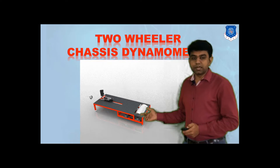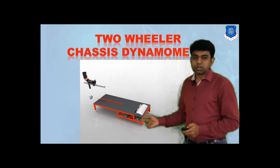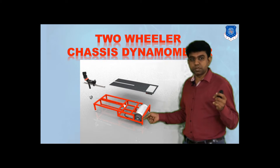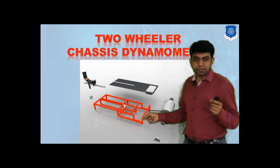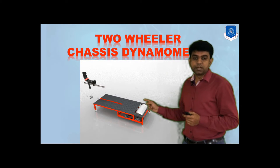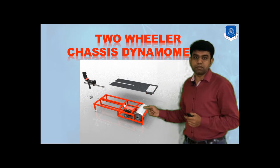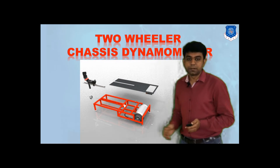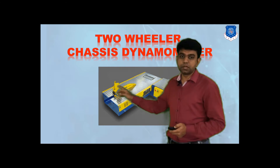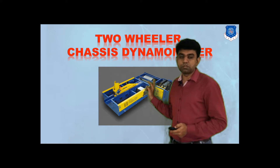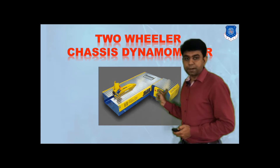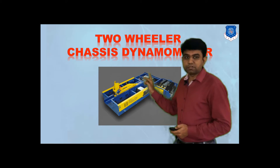Whenever you accelerate the vehicle, the rear wheel will try to roll the bottom roller. To this bottom roller, a normal dynamometer is coupled — it can be a prony brake, rope brake, hydraulic, or eddy current dynamometer. That dynamometer measures the torque available at the roller, and since the roller receives torque from the wheel, you are ultimately getting the torque available at the wheels. So you are actually getting the power available at the wheels with this arrangement.